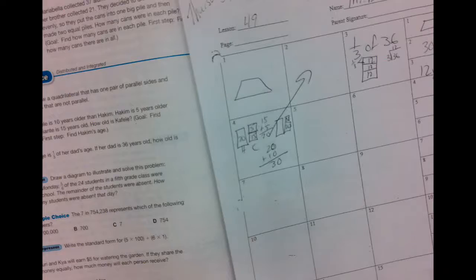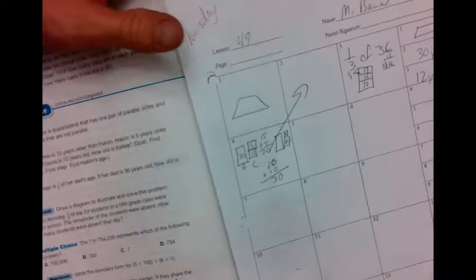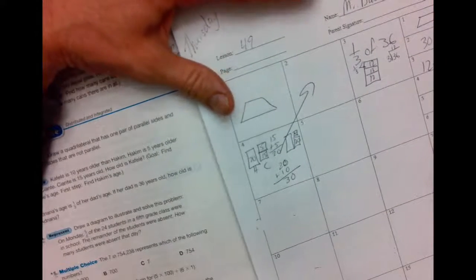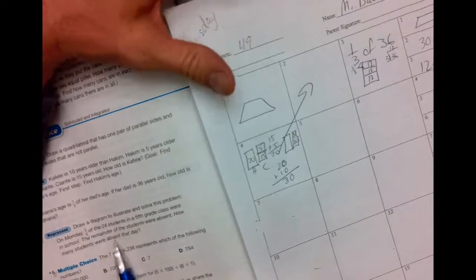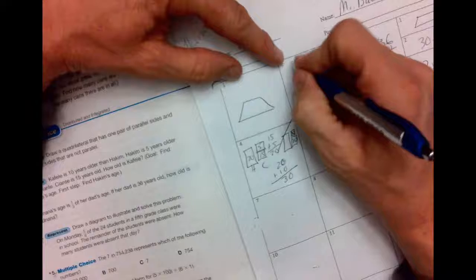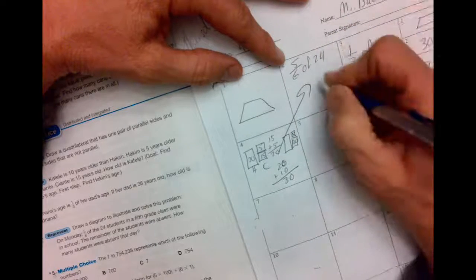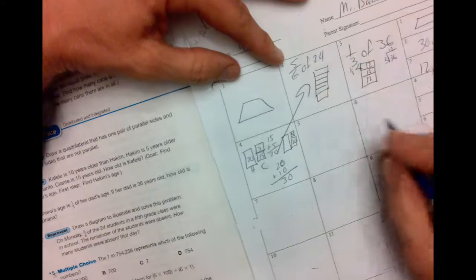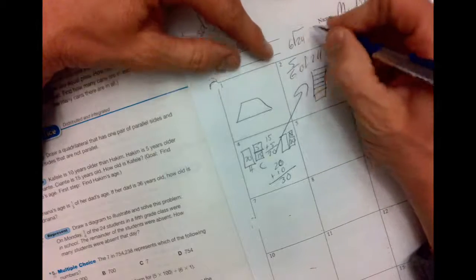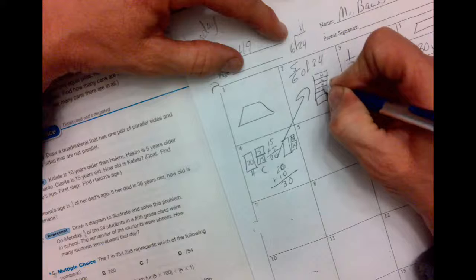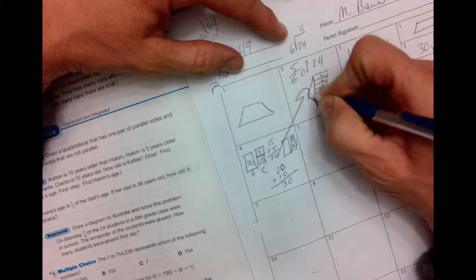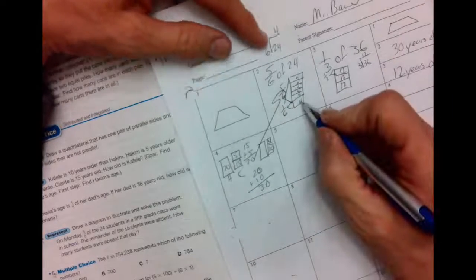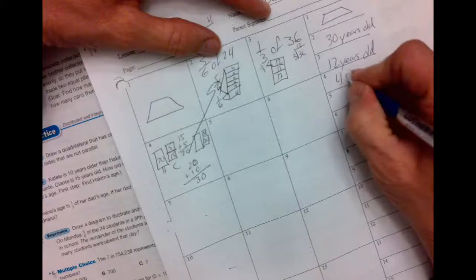Now we're on number four where I messed it up. So we're going to use this box for number four. I'll draw a diagram to illustrate and solve the problem. On Monday, five-sixths of the 24 students in fifth grade were in school. The remainder of the students were absent. How many students were absent that day? So we want to find the opposite of five-sixths. So we've got five-sixths of 24. I've got my dresser drawer. One, two, three, four, five, with six drawers in it. And I'm going to take 24 and divide it by six. You're going to put a four in each one of those. And here's five-sixths. That leaves me with one-sixth were absent. And when we take one times four, you get four.